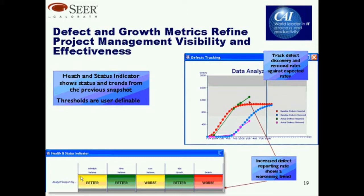Some definitions — these are obvious, but a metric is a standard of measure, a measurement is something that you obtain by measuring, and a benchmark is something that you measure against.